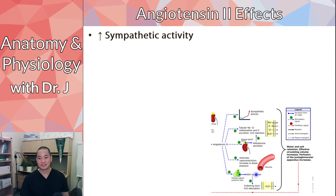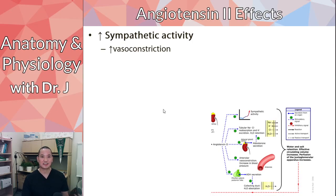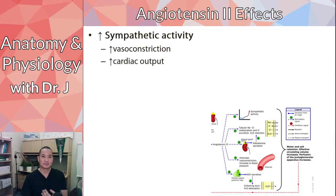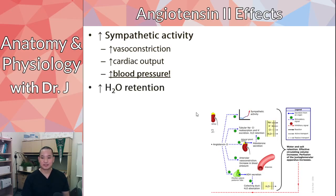First, it increases sympathetic activity. Sympathetic activity increases blood flow and blood pressure — remember the fight-or-flight response. It also increases cardiac output by increasing heart rate and stroke volume, which raises blood pressure. Additionally, angiotensin 2 promotes water retention by telling the kidneys to reabsorb more water, building up fluid volume in the blood vessels, which also increases blood pressure.